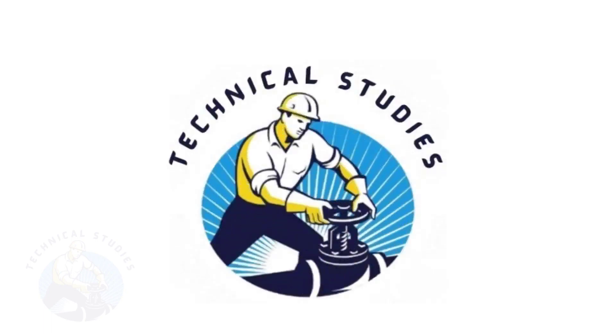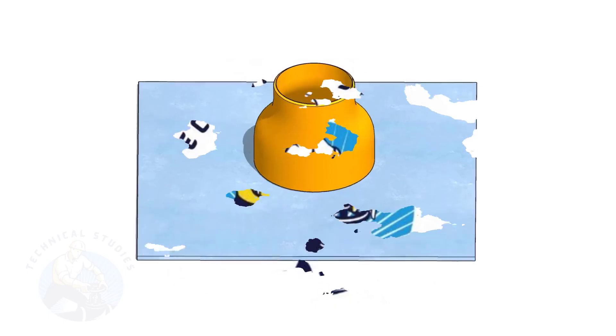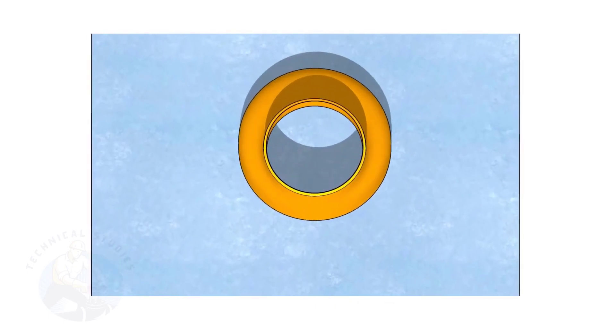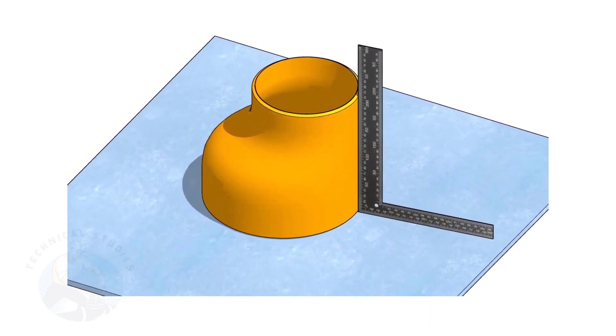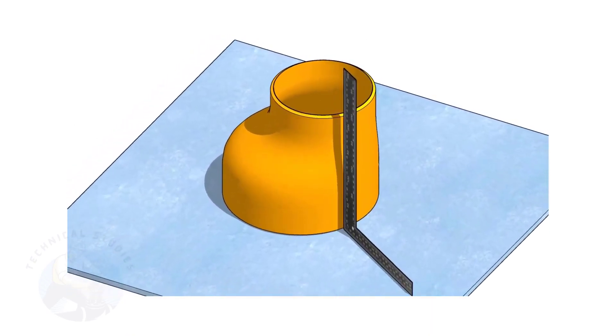Welcome to Technical Studies. Fitting an eccentric reducer to a pipe that is already fitted to another fitting like a flange, tee, elbow, etc. is a little tricky.